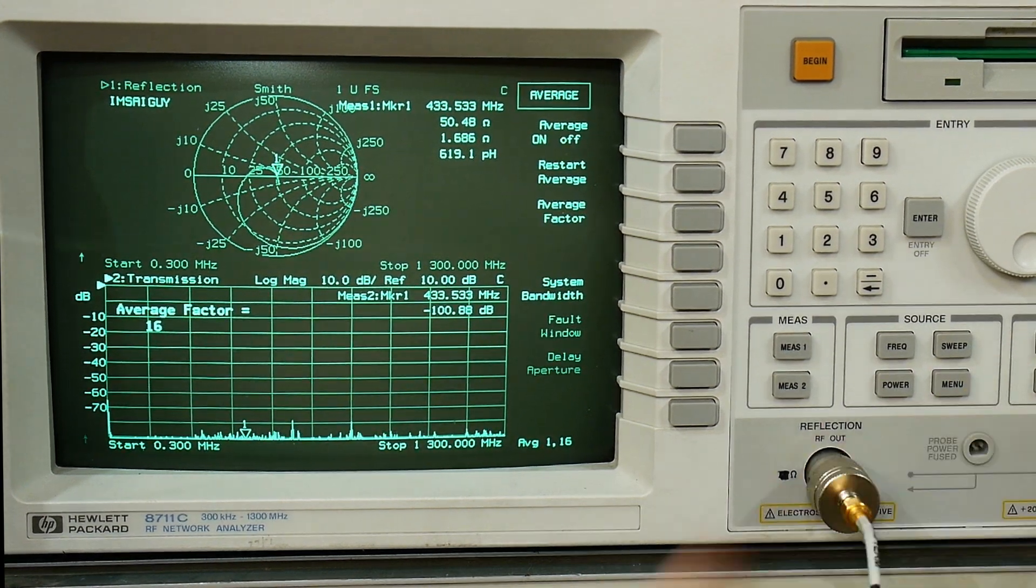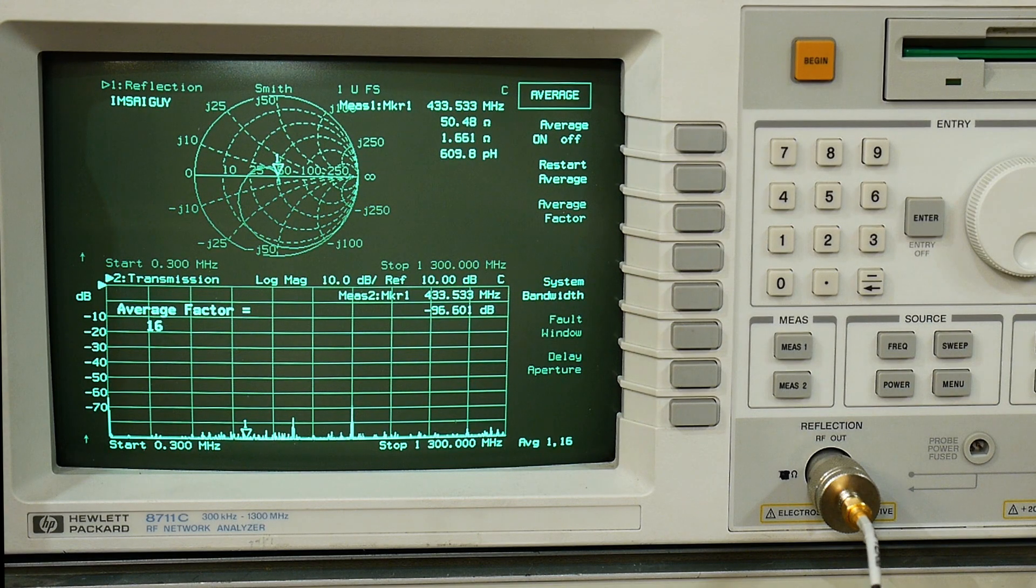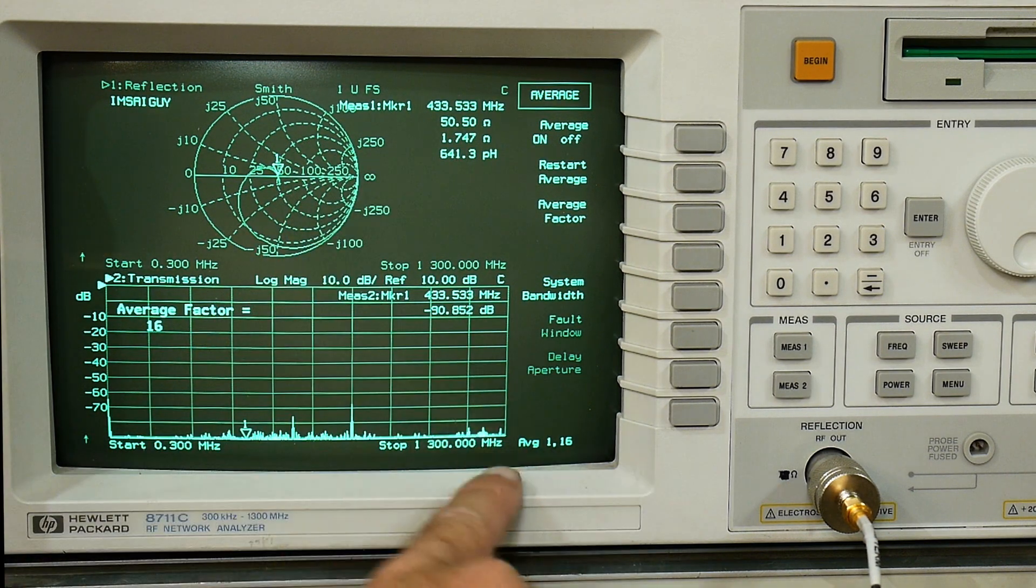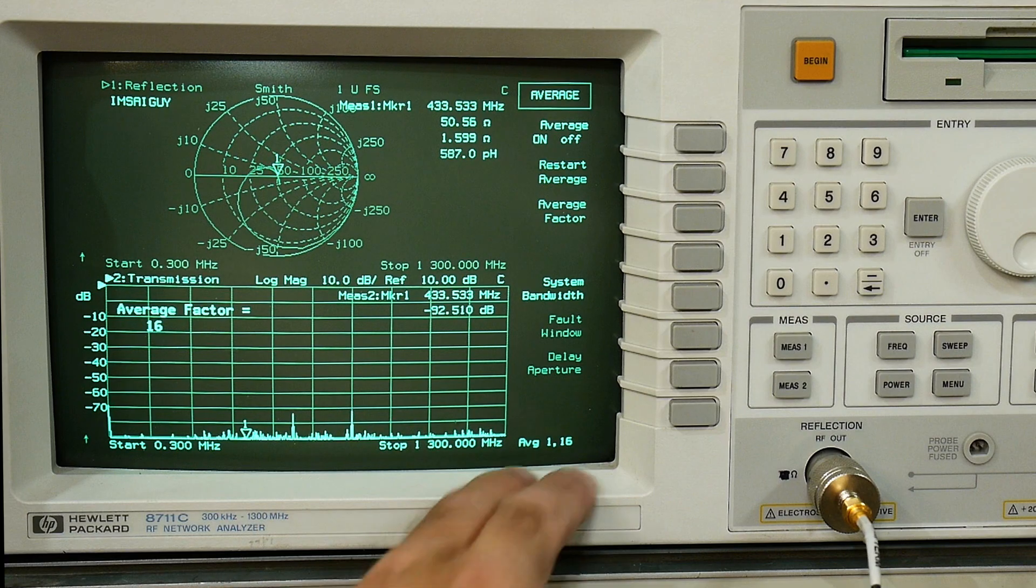Oh yeah it's in averaging. So you can set averaging. You can set the averaging factor and down here is displayed the averaging factor for measurement one and the averaging factor for measurement two. So measurement two is having an average of 16 so it's averaging 16 sweeps.